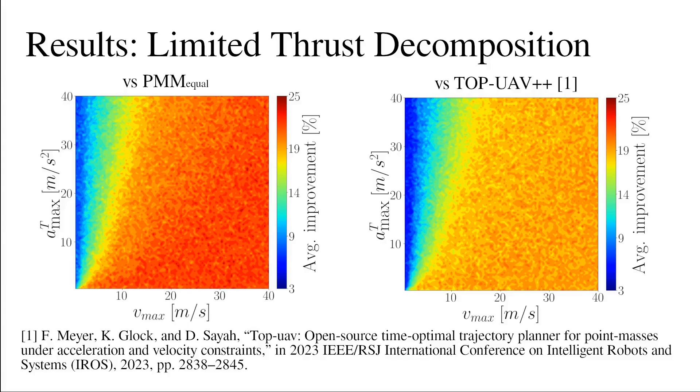And top UAV++, which utilizes four fixed per-axis acceleration and velocity constraints distributions. Our approach resulted in trajectories up to 25% faster, with the largest improvements recorded in agile flight conditions.